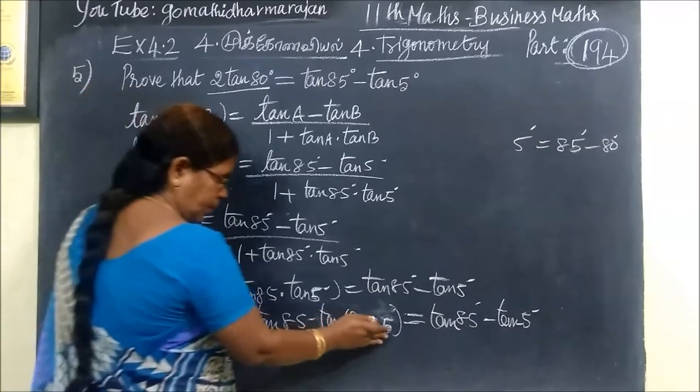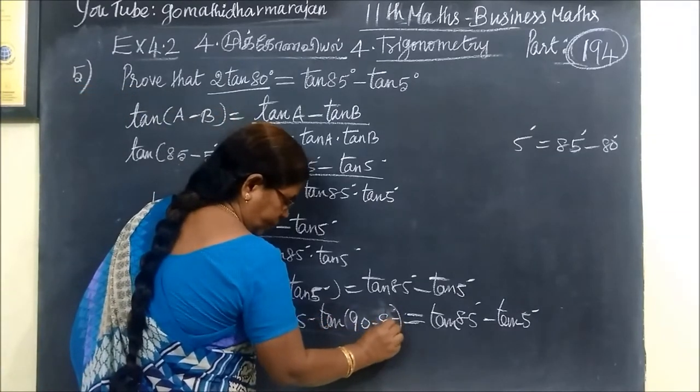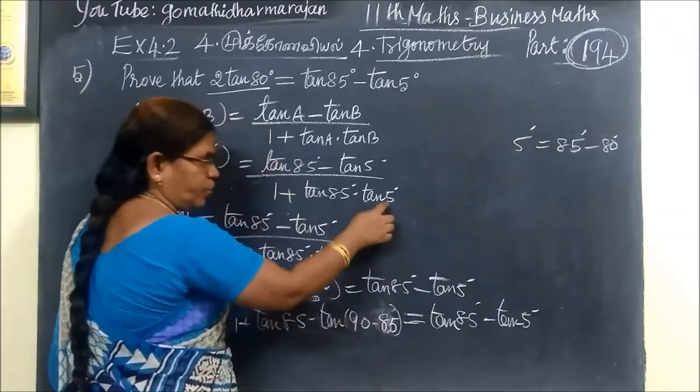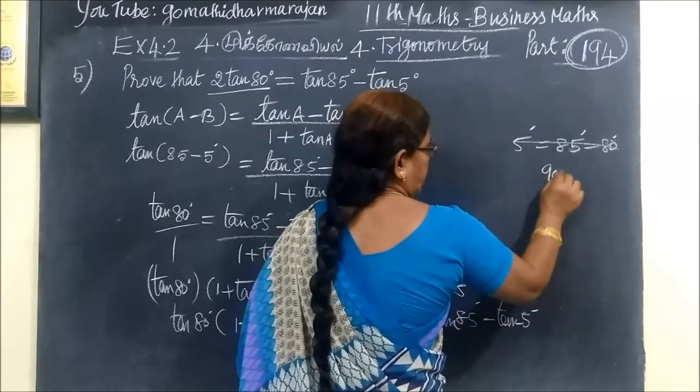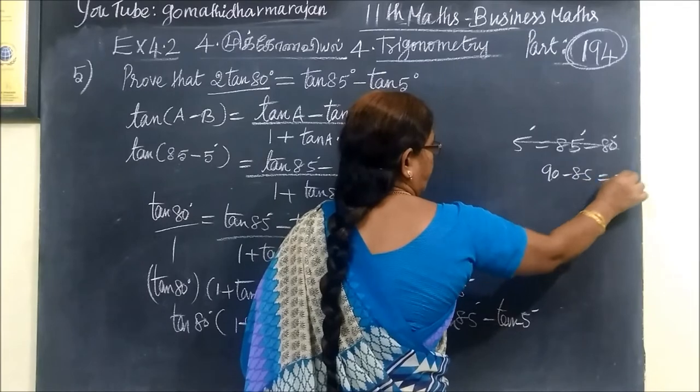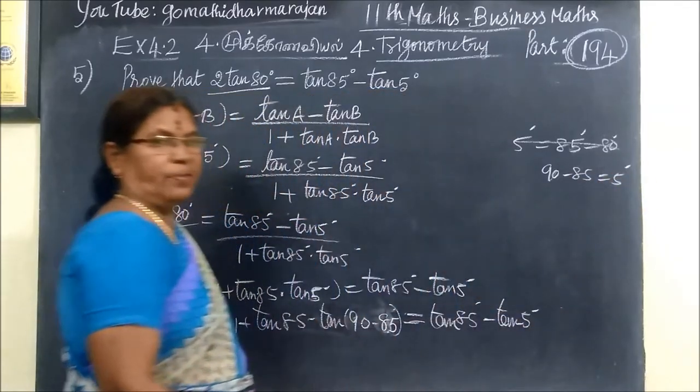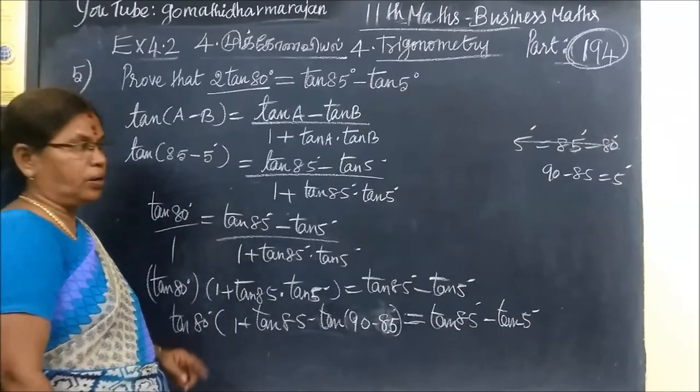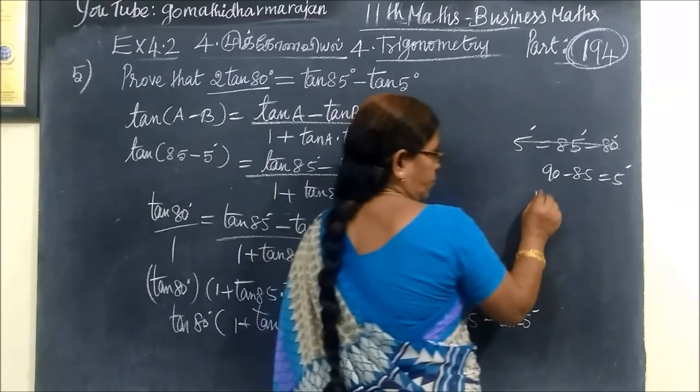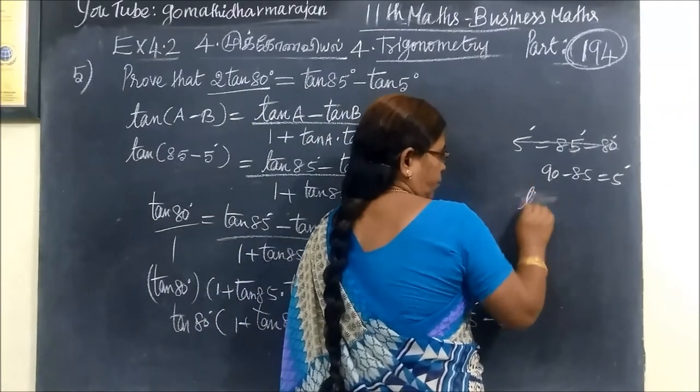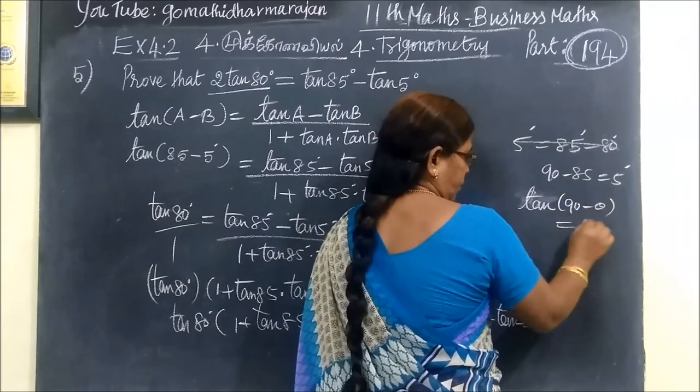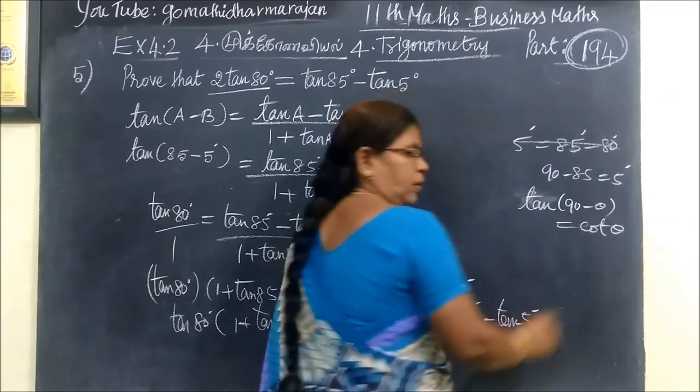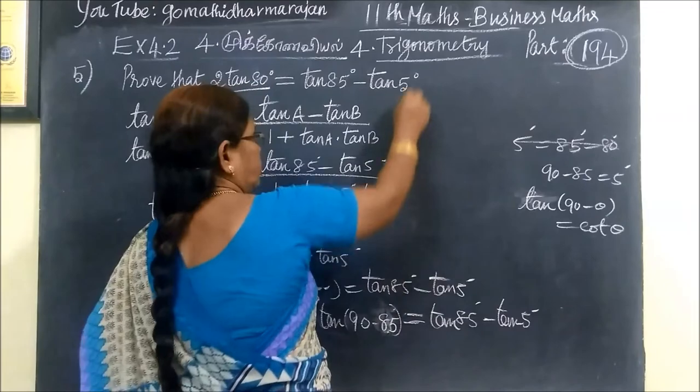Tan of 90 minus 85 equals 5. 90 minus 85 equals 5. Tan of 90 minus theta equals cot theta. You know this property. Tan of 90 minus theta equals cot theta. In that way, you are writing.